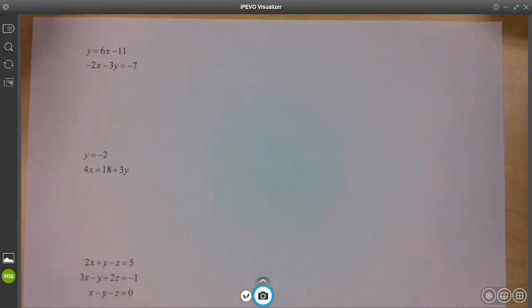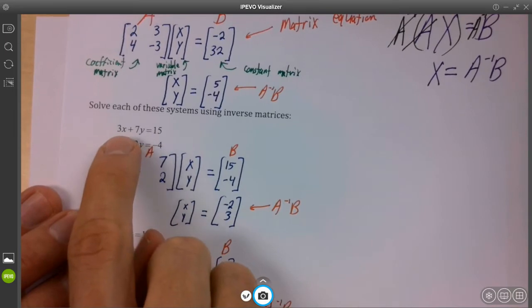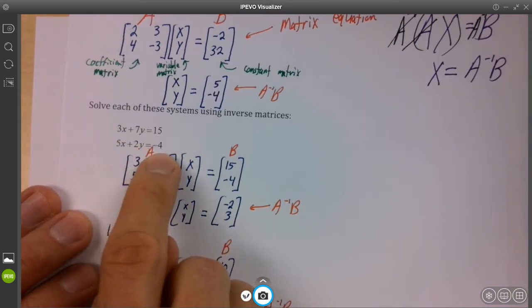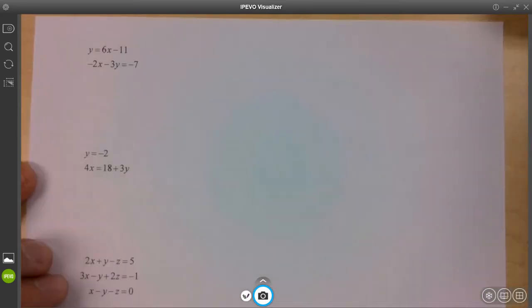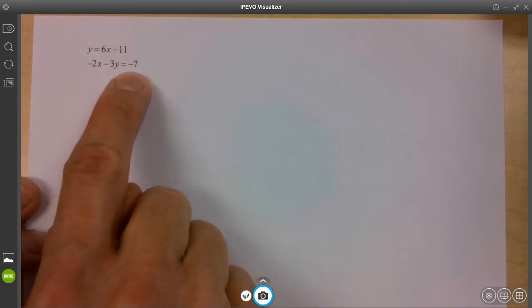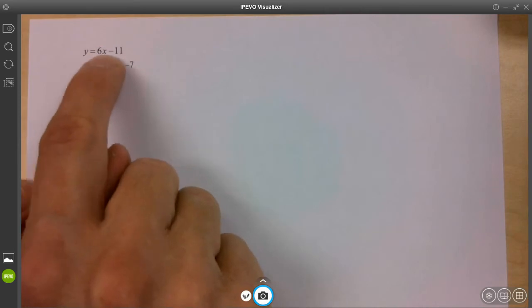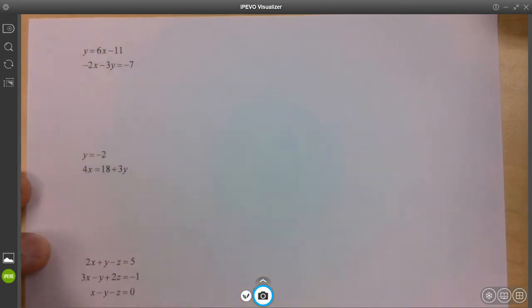I want you to notice that every problem we did so far was pretty much set up for us in terms of X, Y equals a number, X, Y equals a number. And we need it to be that way. That's called standard form. In this case, it's not. The bottom one is X, Y equals number. So what we're going to do here is make this one look like that one.